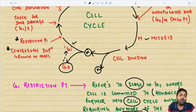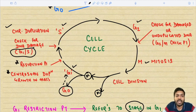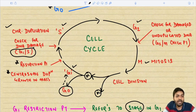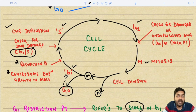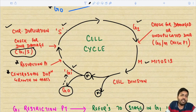After the restriction point comes a checkpoint. The first important checkpoint is the G1/S checkpoint, which checks for DNA damage. Before the cell proceeds to DNA duplication, it checks whether the DNA to be replicated is of good quality or has any kind of damage, ensuring resources are not wasted on replicating damaged DNA.